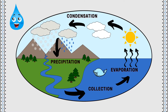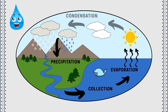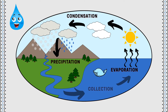There are four main steps to the water cycle: evaporation, condensation, precipitation, and collection. The water cycle does not have a real starting point, but we'll begin in the ocean since that's where most of Earth's water is.